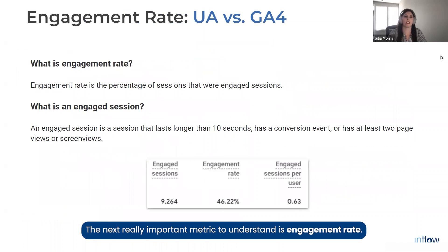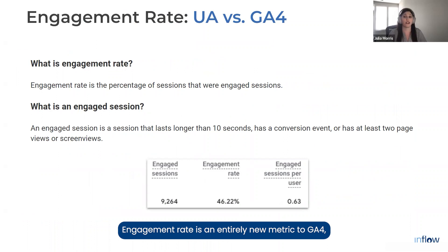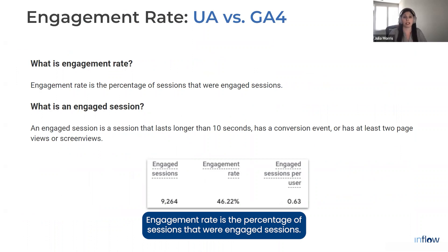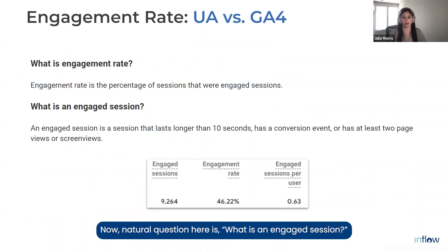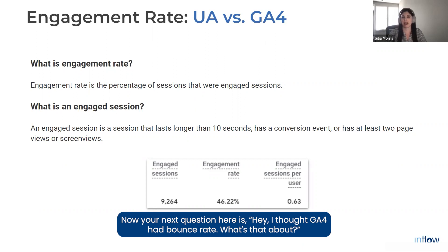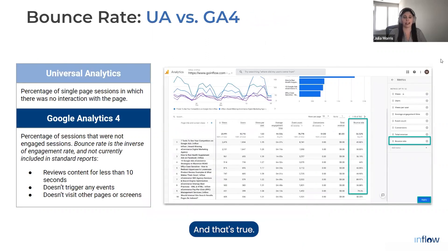The next really important metric to understand is engagement rate. Engagement rate is an entirely new metric to GA4 and was initially the answer to the Universal Analytics bounce rate. It is the percentage of sessions that were engaged sessions. An engaged session is a session that lasts longer than 10 seconds, has a conversion event, or has at least two page views or screen views. Now, you might be wondering — GA4 also has a bounce rate, so what's that about?